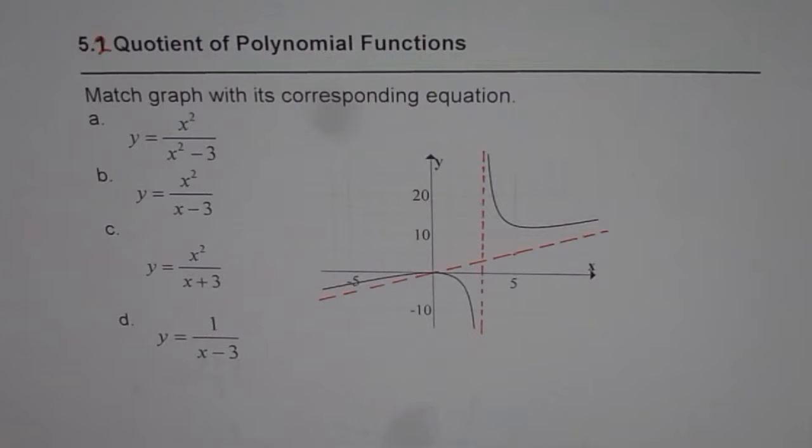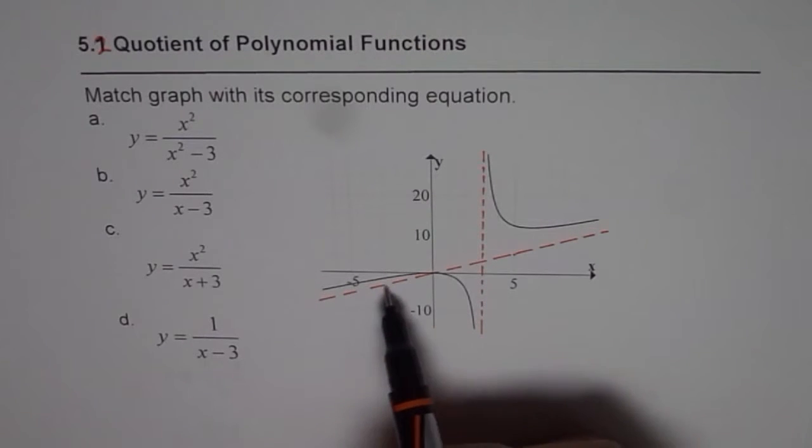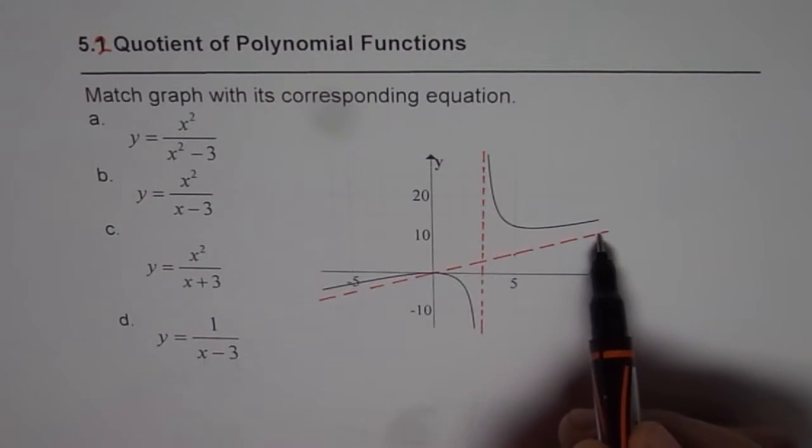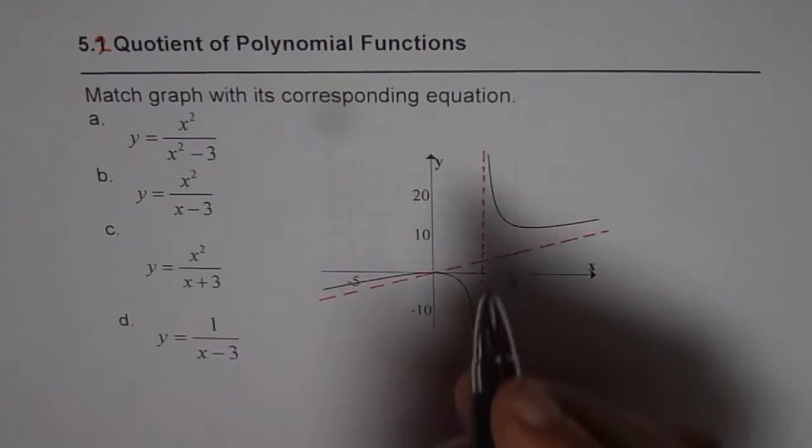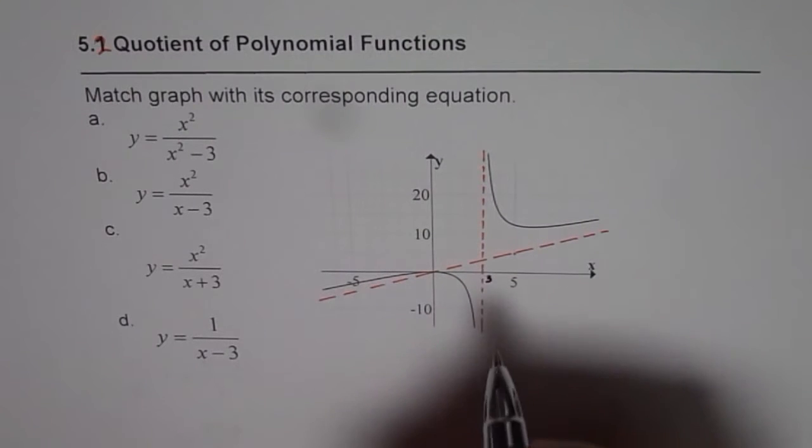In this graph, we have two kinds of asymptotes. One is oblique asymptote, the other one is a vertical asymptote. To match the equation, we should figure out what these asymptotes are.